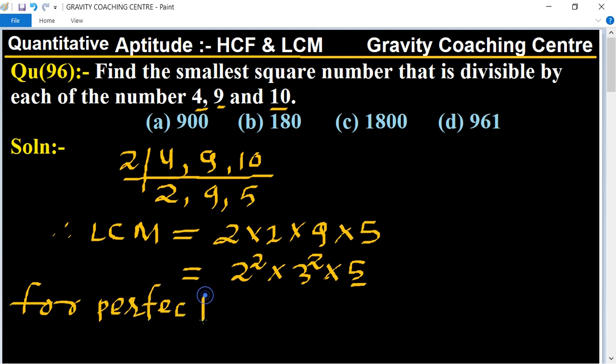For a perfect square number, we will multiply by 5.